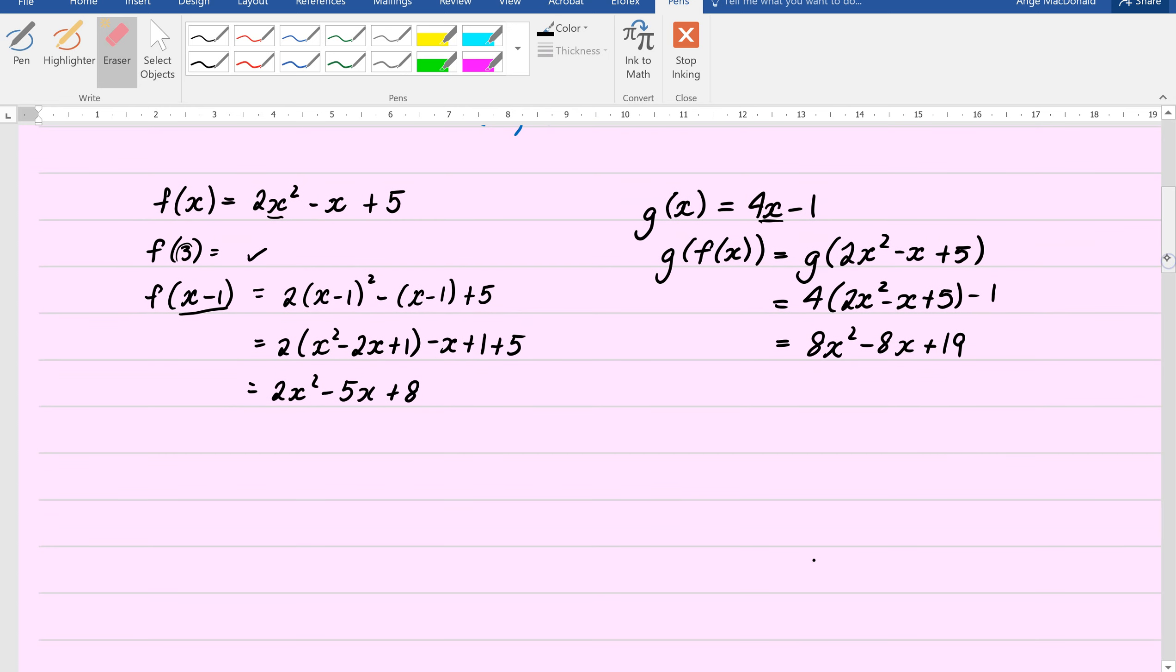So we looked at, before, we had f of 3, meant we substitute 3 in place of x, and we ended up with 2 times 3 squared minus 3 plus 5 equals 20. So what I'd like you to consider is, what if I had f of x equals 3? Is that saying the same thing? And I'd like to think that you go, no, no, it's not. Right? This is telling you that the function, this whole thing, actually equals 3. That is very different. Right? It is not the same as that. Very different.